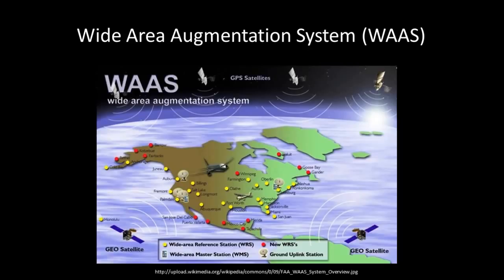The corrected differential message is then broadcast through one of two geostationary satellites, or satellites with a fixed position over the equator. The information is compatible with the basic GPS signal structure, which means any WAAS-enabled GPS receiver can read the signal.